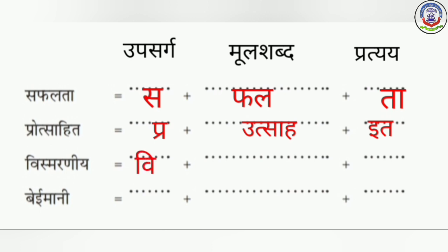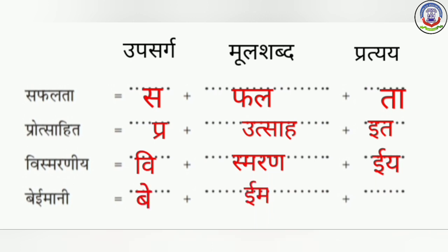Vismarnia mein 'Vi' upsarg hai, 'smaran' mool shabd hai aur 'iya' pratyay hai. Beimani mein 'be' upsarg hai, 'imaan' mool shabd hai aur 'i' pratyay hai.